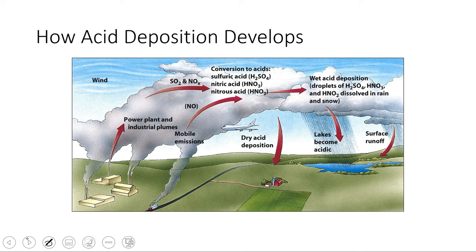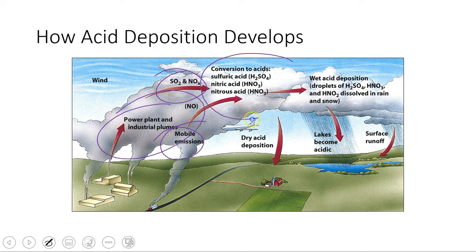So how does acid deposition develop? We have emissions from power plants, so coal plants, metal smelting operations, and so on. We have emissions from motor vehicles. Those release our sulfur and nitrogen oxides. Those get converted to various acids in the atmosphere, primarily sulfuric acid and nitric acid. Those can dissolve into water, they can just deposit directly in dry form, and cause problems.